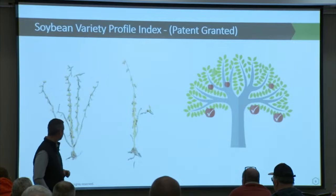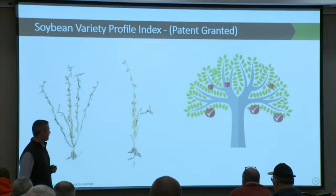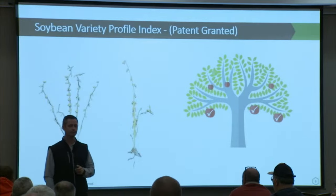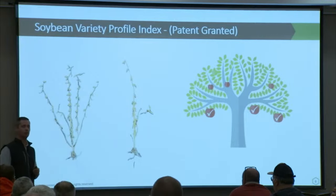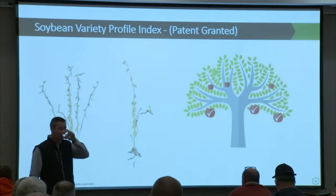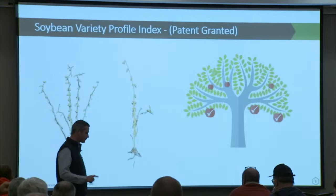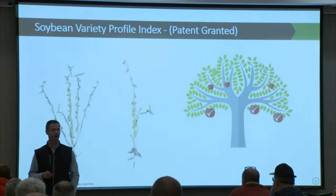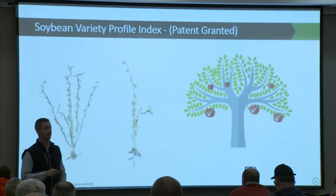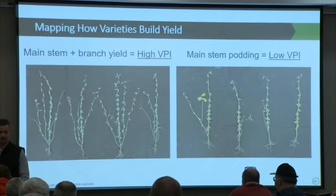What we uncovered was that where varieties built their yield was a direct correlation to how they performed at a subfield level. On the left we've probably got a variety that's branching a little more; on the right, one that's more main stem. What have we been historically taught? If you give them space, all soybeans branch — all soybeans compensate. What is also true is that the ability or the magnitude to which they compensate is very, very different. That was the magic pill in all of this work.